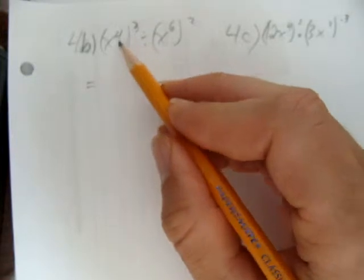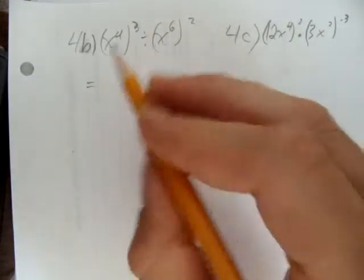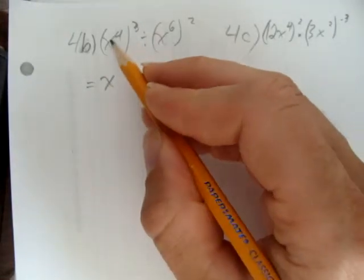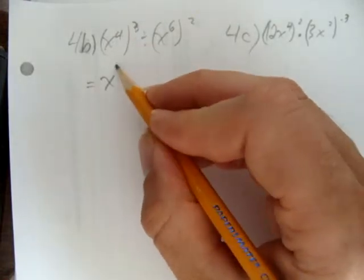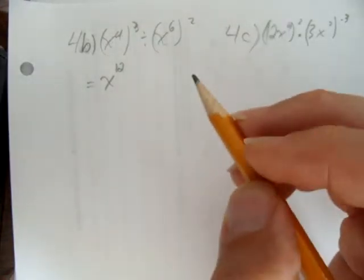And we learned before, when you have an exponent on the exponent, you multiply the exponents. x to the power of 4 all to the power of 3 is 4 times 3 which gives you 12.